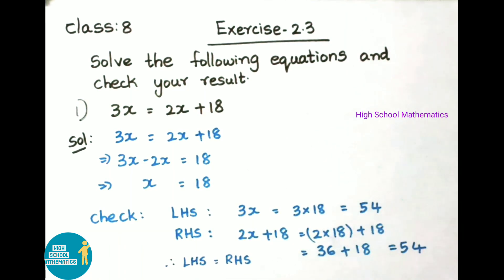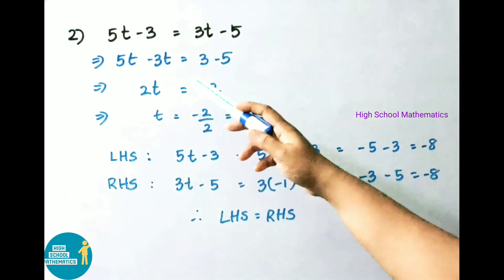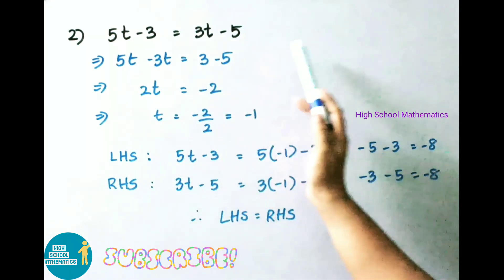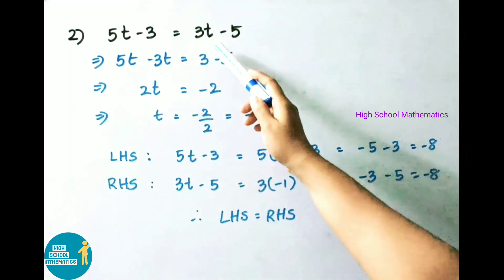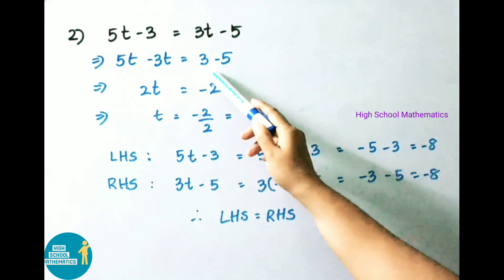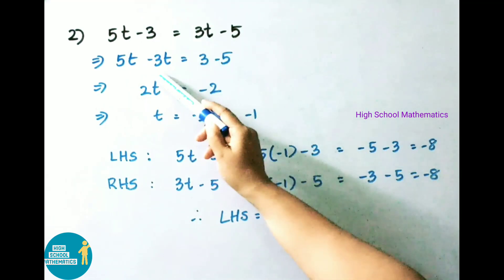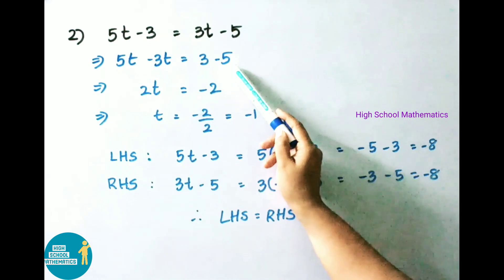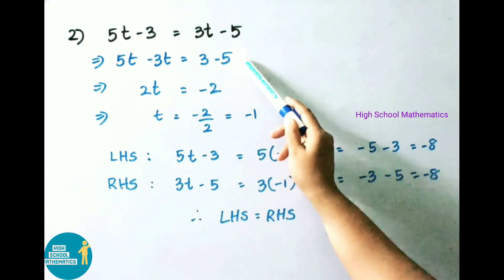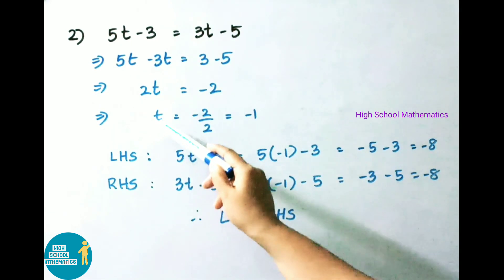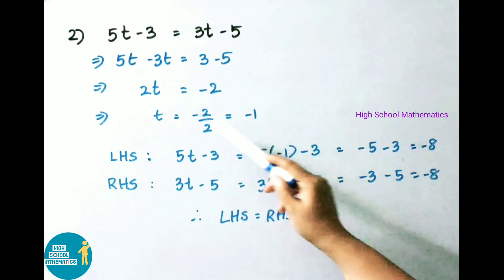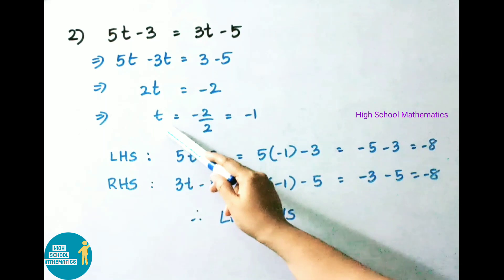Second sum: 5t − 3 = 3t − 5. Bring variables and constants separately. Plus 3t on transposing becomes minus 3t; minus 3 on transposing becomes plus 3. So 5t minus 3t = 3 minus 5, giving 2t = −2. Therefore t = −2/2 = −1.